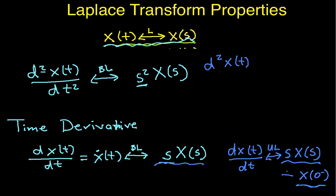So, d squared x of t over dt squared transforms with the unilateral transform into s squared x of s minus s x of 0 minus, minus x dot of 0 minus. Okay, so this is the first derivative of x evaluated at the time 0 minus, this guy here.